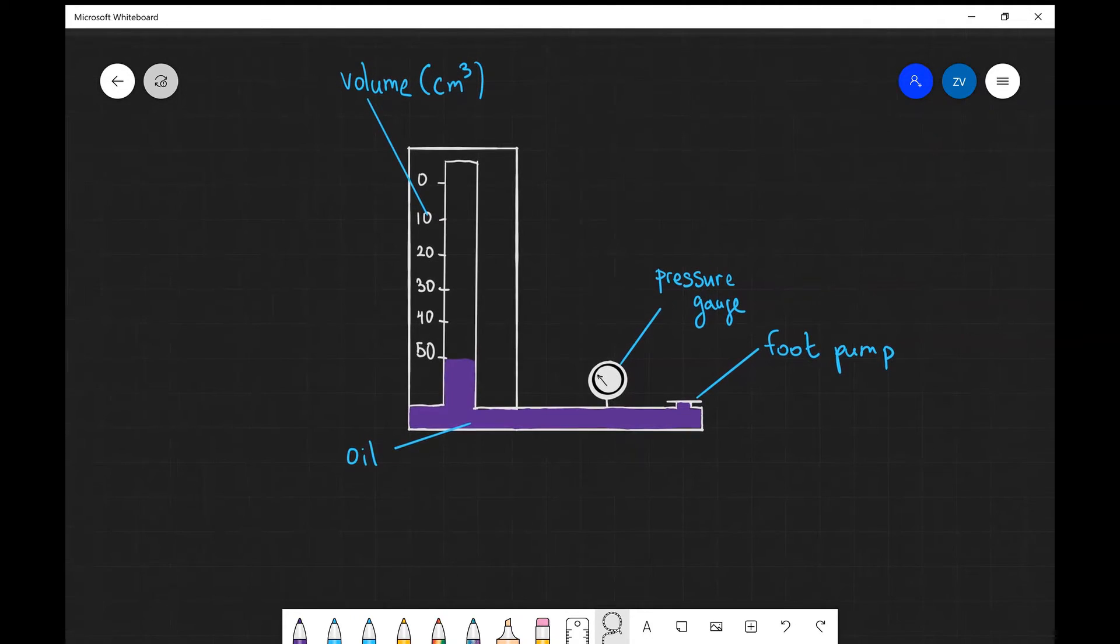We have some oil contained over here that is connected to a foot pump. If we apply pressure onto the foot pump, the oil is going to go up and trap the gas, essentially reducing the volume of this gas and increasing its pressure, and that will be proving Boyle's law.